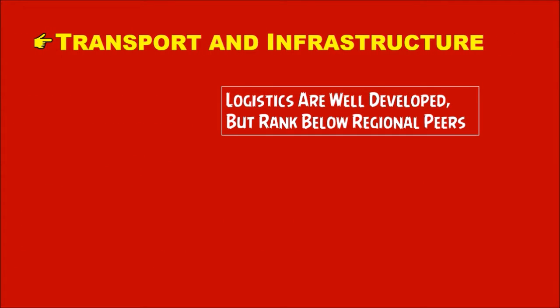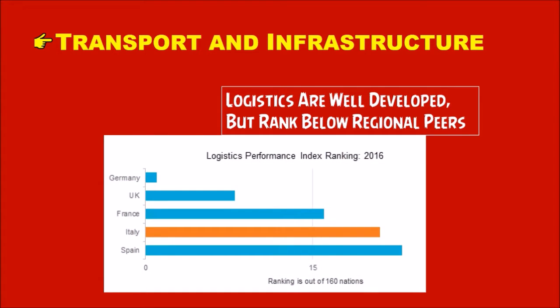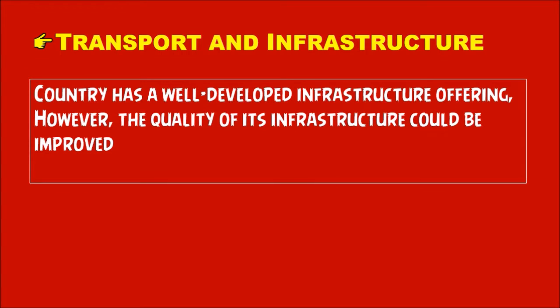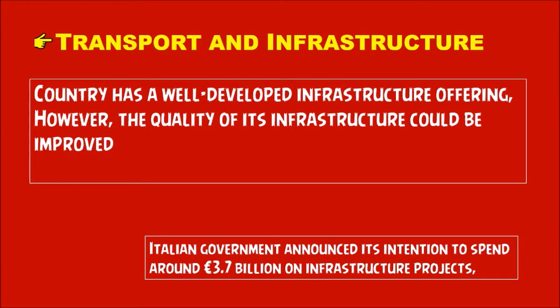For transport and infrastructure, logistics are well developed but ranking below regional peers. A chart shows Italy in second position in the Logistics Performance Index ranking 2016. The country has well-developed infrastructure, though quality could be improved. The Italian government announced its intention to spend around 3.7 billion euros on infrastructural projects.